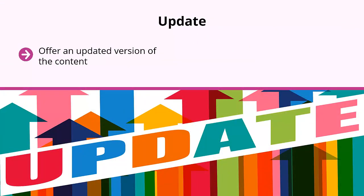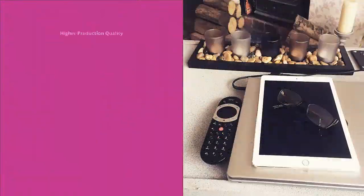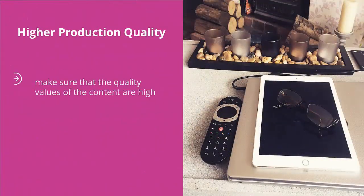To improve content, you should do the following. First, update — offer an updated version of the content. If the hottest pictures your competitors are showing are grainy and obviously old, come up with an updated picture. You'd be surprised how viral your content can be simply because you are publishing something that is obviously up-to-date. Second, higher production quality — when you're publishing content, make sure the quality values are high: high resolution, crisp imagery, top-notch colors.